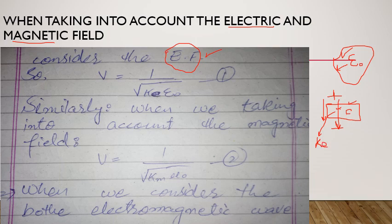Dielectric constant — dielectrics basically insulators ہوتے ہیں — یہ constant ہمیں بتاتا ہے کہ ہم اس material کے اندر سے کتنی field lines pass out کر سکتے ہیں، کتنی store کر سکتے ہیں، اور یہ free space کی permittivity کے بارے میں بھی بتاتا ہے۔ جب ہم speed of light کی بات کریں گے matter میں تو اسے v کا نام دیں گے کیونکہ c تو universal constant ہے۔